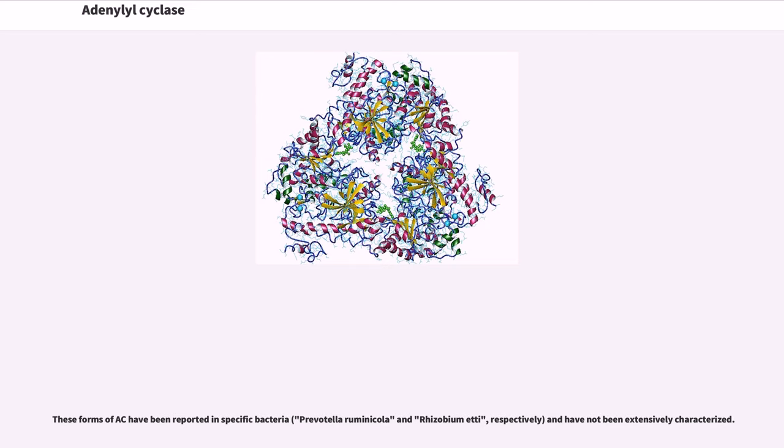The AC4 from Yersinia is a dimer of 19 kDa subunits with no known regulatory components. These forms of AC have been reported in specific bacteria, Prevotella ruminicola and Rhizobium etli, respectively, and have not been extensively characterized.